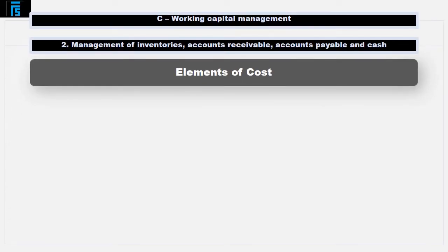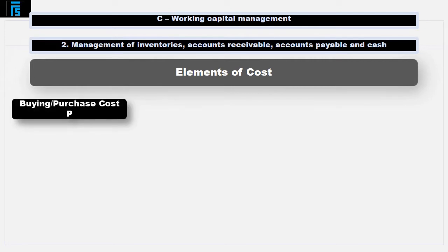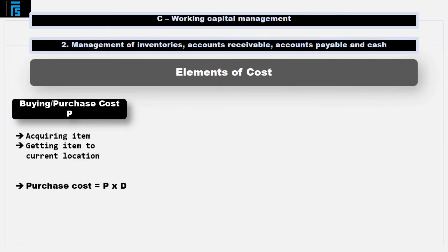In simple terms, there are three categories of cost in relation to inventory. The buying or purchase cost P refers to the cost of acquiring an item. In accordance with financial accounting standards, this will also include costs incurred in getting the item to its current location, for example, delivery costs. The total annual purchasing costs incurred will be P multiplied by D, where D is the annual demand.